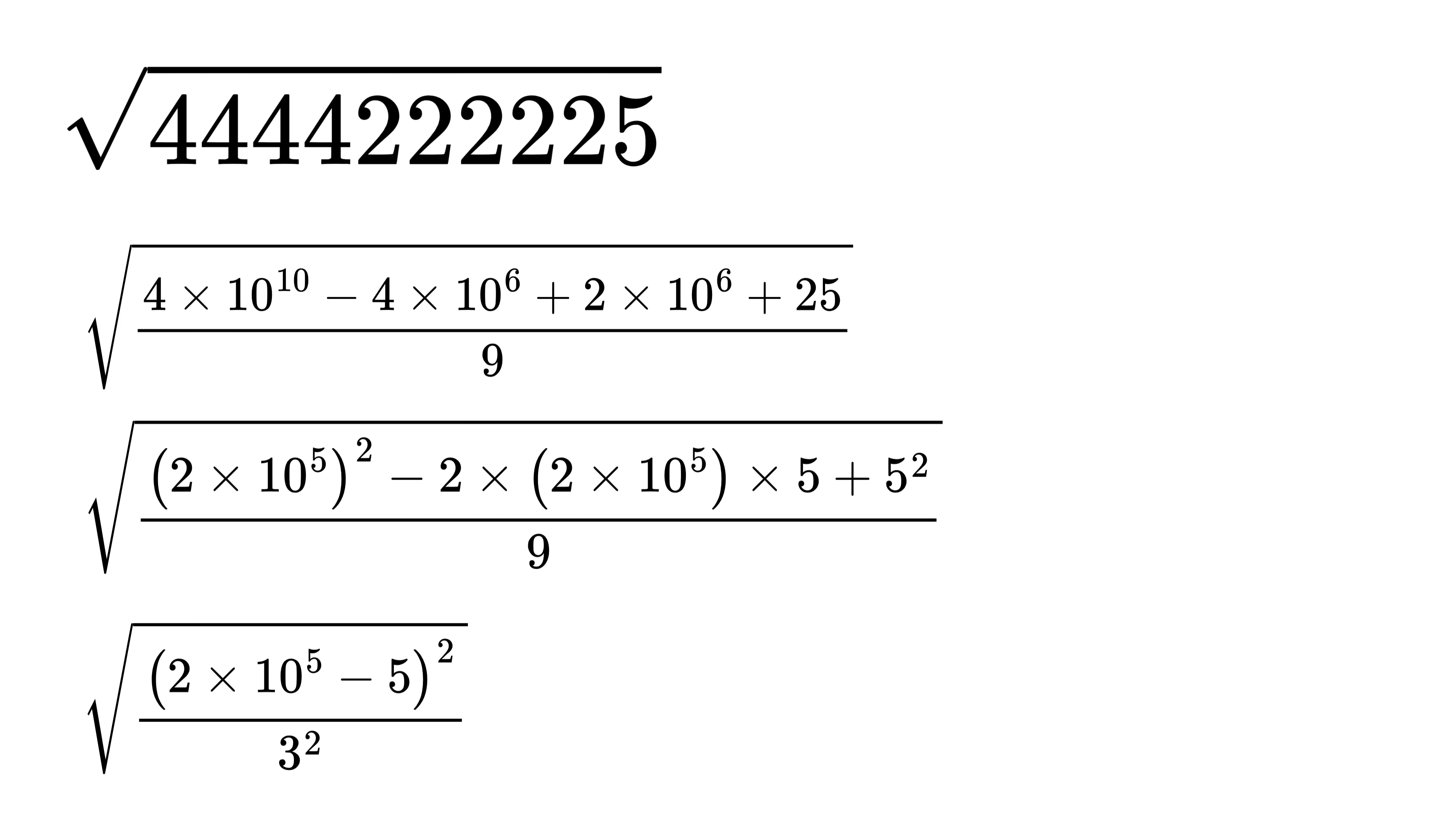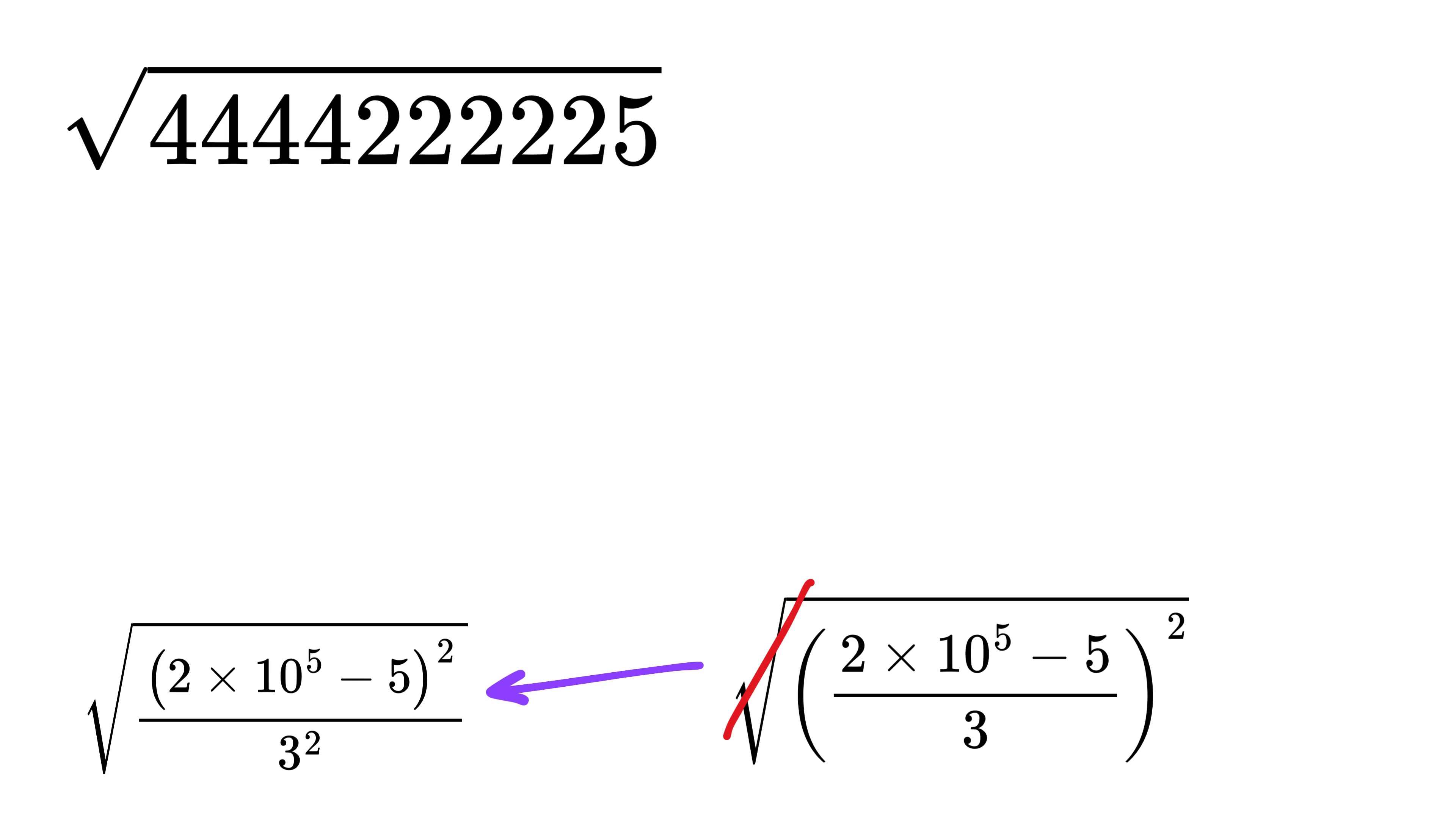So again using this rule, we can rewrite this as 2 times 10 raised to the fifth power minus 5 divided by 3 whole square. This square root and this square gets cancelled out.